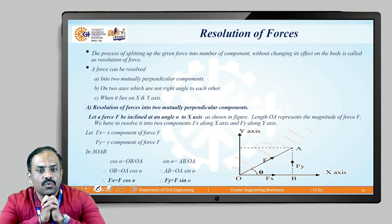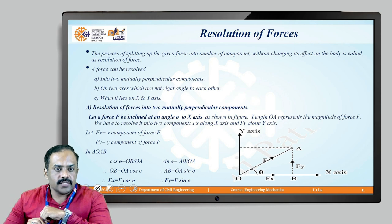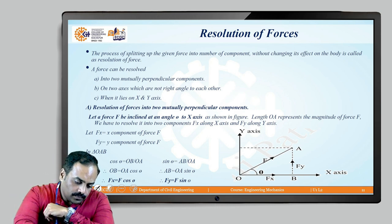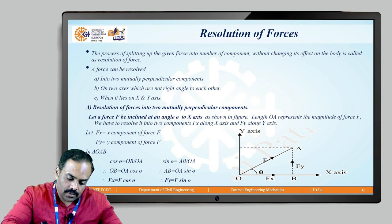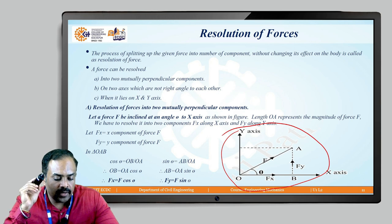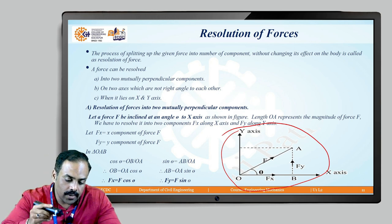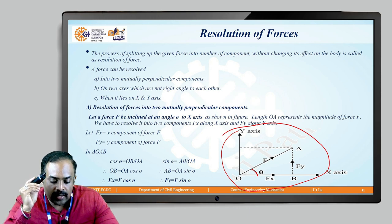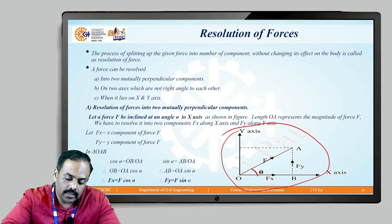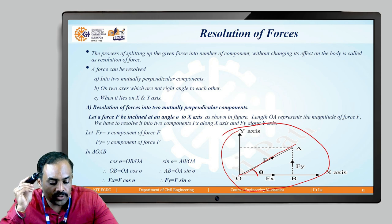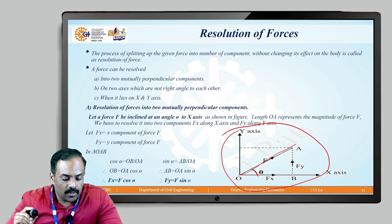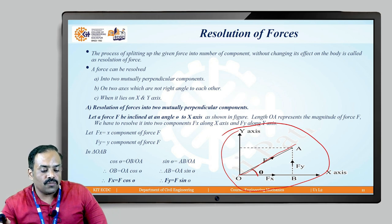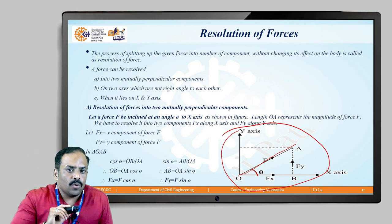For two mutually perpendicular components, let the force F be inclined at an angle theta to the x-axis. The length OA represents the magnitude of the force F. We have to resolve it into two components: Fx along the x-axis and Fy along the y-axis.